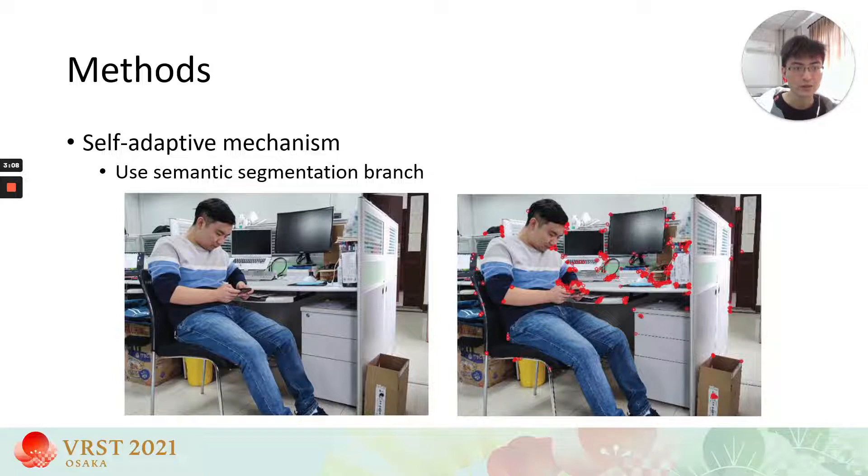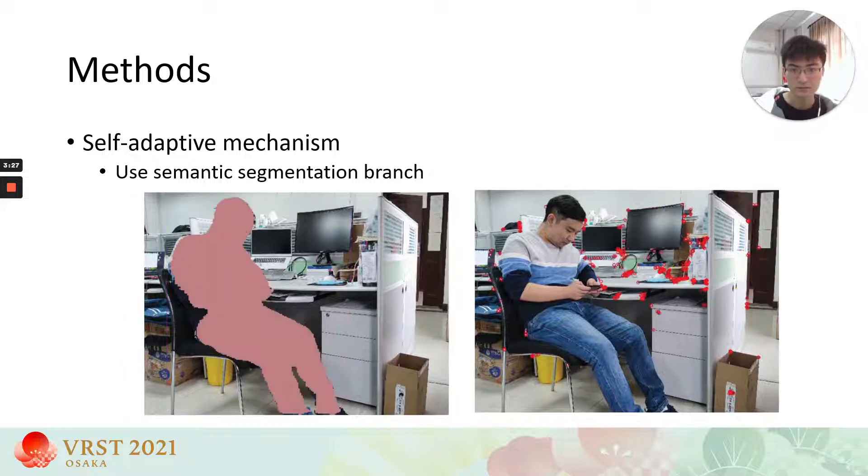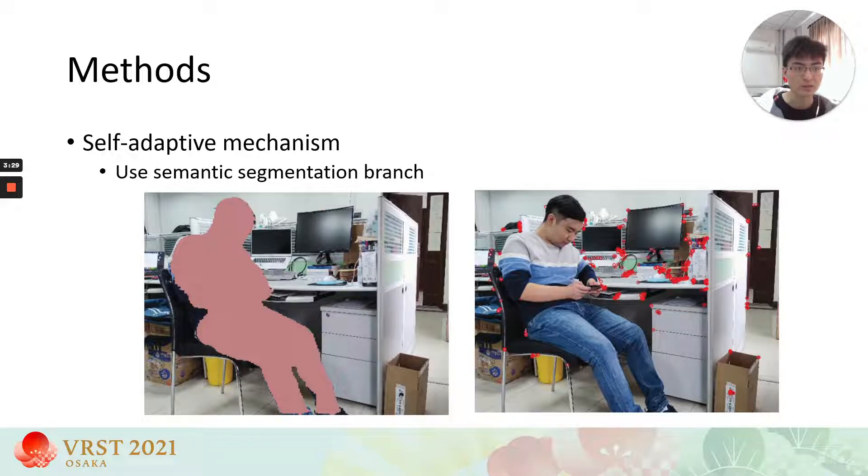The left figure is the original image and the red arrows of the right image are extracted feature points. When we use the bounding box to remove feature points, the remaining points is not enough for system to track or even result in the system breakdown. So we use segmentation to solve this problem, that is semantic segmentation branch.